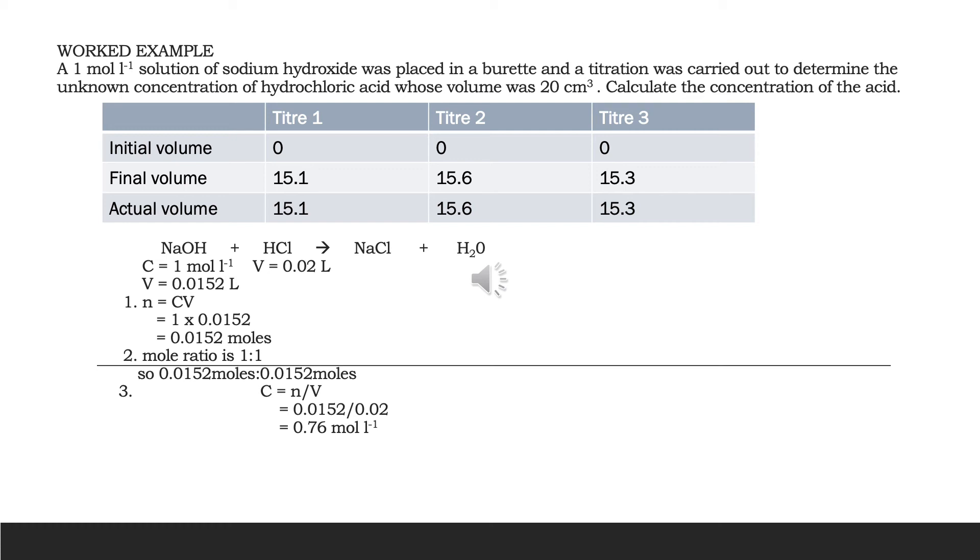So step one, N equals C times V. That's one because that's the concentration times 0.0152. Remember that's the average of the two volumes which are concordant divided by a thousand to make them into litres.